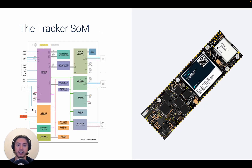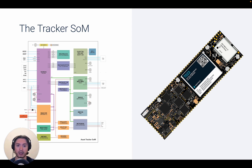In contrast, with the Tracker SOM, we wanted to incorporate features that are common in asset tracking applications. So in addition to the cellular modem for connectivity, we added, amongst other things, a GNSS module for positioning, a CAN transceiver to connect the vehicle's diagnostic ports, an IMU, and a battery management module. This greatly simplifies the hardware development process that you need to take in order to get your product out into the field.